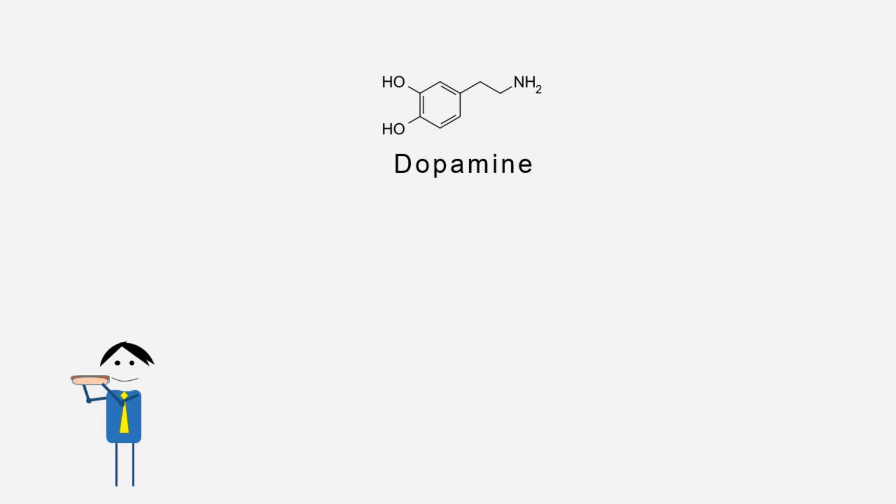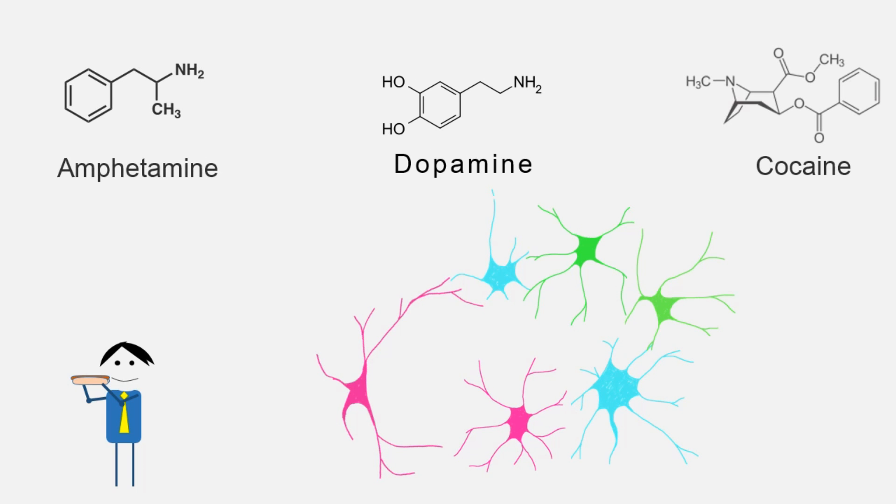Dopamine is a neurotransmitter, a molecule that brain cells called neurons use to communicate. However, most substances with addiction potential also cause an increase in dopamine release. And when the amount of dopamine increases or decreases by a lot, this can have a big effect on the brain's reward circuit.